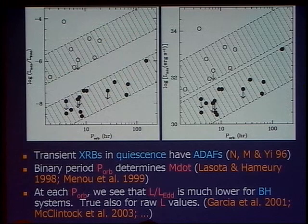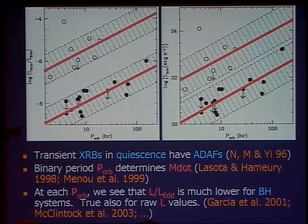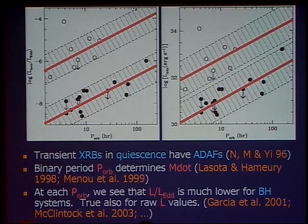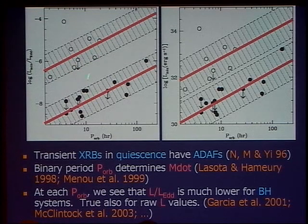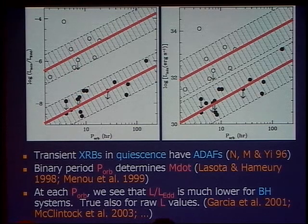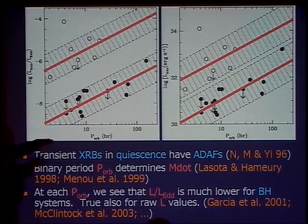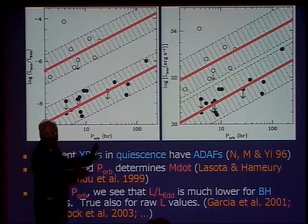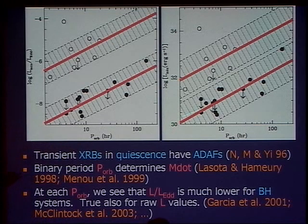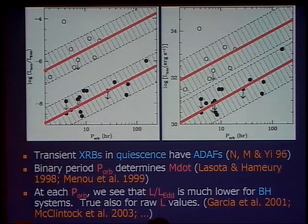What you see very nicely — I've drawn red lines to help — is that the mean of all the neutron stars and the mean of all the black holes differ by about two and a half orders of magnitude, a factor of 300, in these Eddington units, which we think is the correct way to do it. If you prefer to use ergs per second directly, you still get two orders of magnitude. It's not a small effect. Plotted in this way, there's absolutely no overlap between the neutron stars and black holes, and the mean trends are completely different.